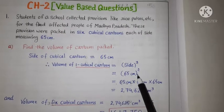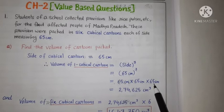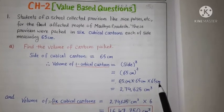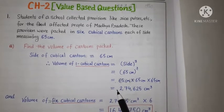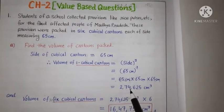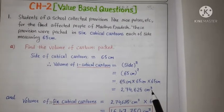Ab hume product form mein expand karenge. 65 cm multiply 65 cm multiply 65 cm. 65 ko 3 times multiply karenge. Hamein paas volume of one cubical carton ban jayega 2,74,625 cm cube.